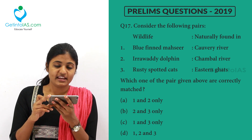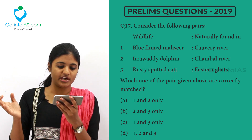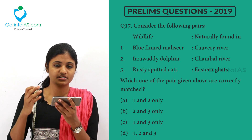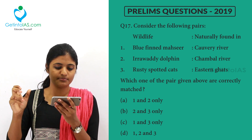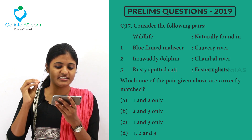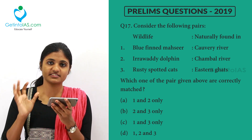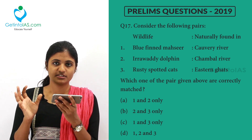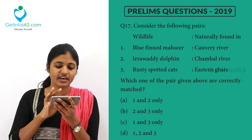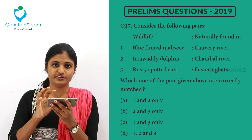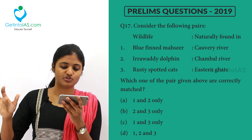Next question: wildlife is listed on the left side matched to where it is naturally found, and they are asking which pair is correctly matched. Looking at option two — Irrawaddy dolphins — these dolphins are naturally found near the Odisha part.